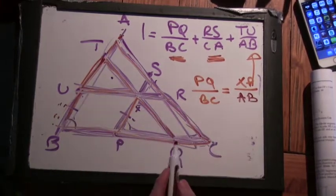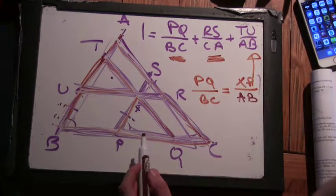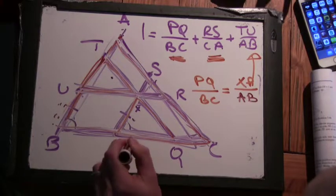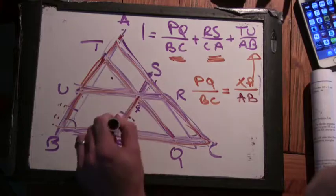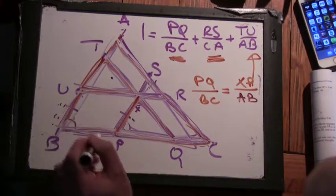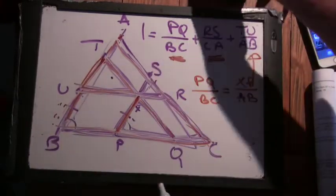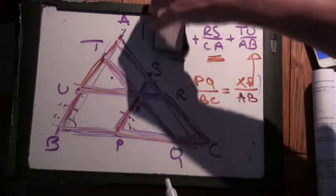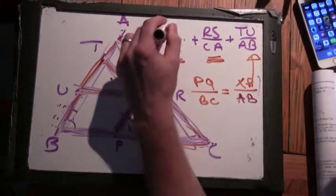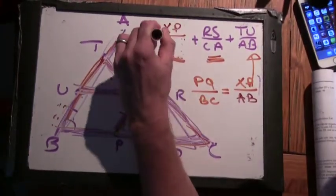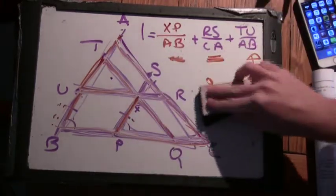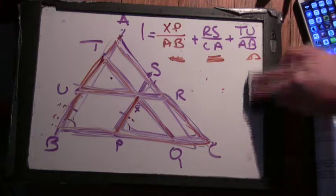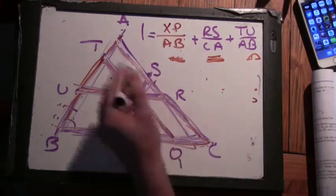And then, in the second video, we found that PQ to BC is the same as this line here, XP to AB. So I'm going to erase that here, and instead I'm just going to write in now, XP to AB. And what do you think we can do with this, RS to AC or CA?